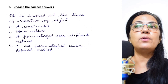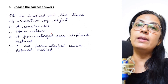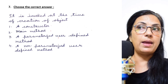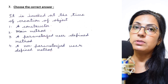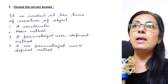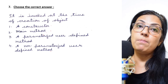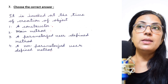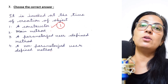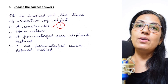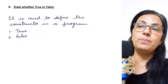Next question: what is invoked at the time of creation of an object? Options are: a constructor, the main method, a parameterized user-defined method, or a non-parameterized user-defined method. Parameterized and non-parameterized user-defined functions are called using the object. The main method is not called when creating an object — we may create the object within the main method. So the remaining option is: a constructor. A constructor is automatically invoked at the time of creation of the object. Please watch the constructor video; I will provide links in the end screen.